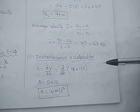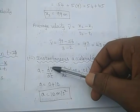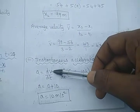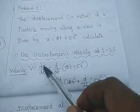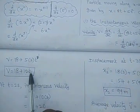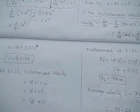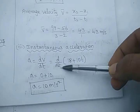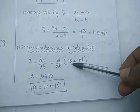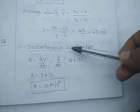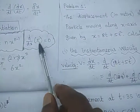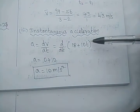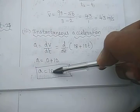The next part is instantaneous acceleration. Acceleration is the rate of change of velocity, given by dv by dt. We differentiate the velocity equation 18 plus 10t with respect to time. The differentiation of the constant 18 is 0 since there is no time term. For 10t, we get 10 times 1 times t^0, which equals 10. So acceleration equals 10 meters per second squared.